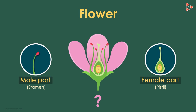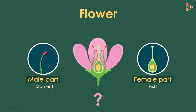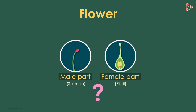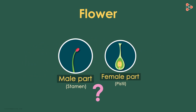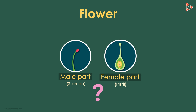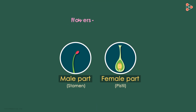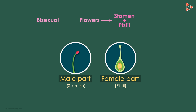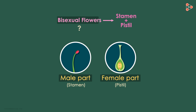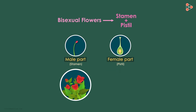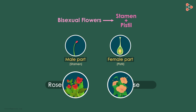Some of them do. What do we call the types of flowers which possess both the male and the female floral parts together? Flowers which contain both stamen and pistil together are called bisexual flowers. Rose and China rose are a few examples in this category.